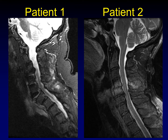What do they have in common? What we're seeing here is abnormal T2 signal within the central cervical spine, and you can see that there's abnormal T2 signal in front and behind the spine in both of these circumstances.